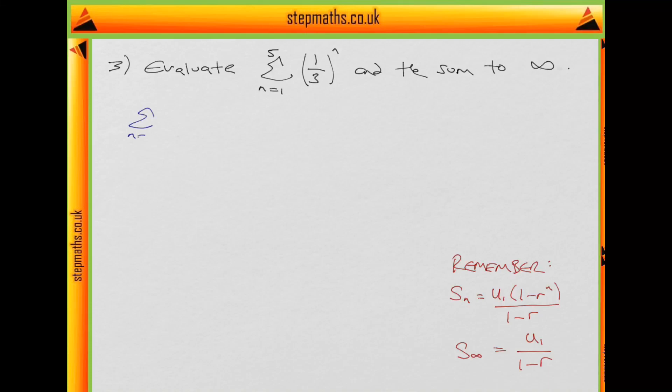So you have the sum from n equals 1 to 5 of 1 third to the power of n equals, when n equals 1, 1 third, plus when n equals 2, 1 third times 1 third. When n equals 3, 1 third times 1 third squared, plus last term,